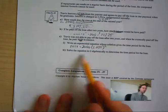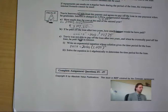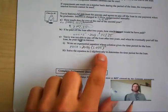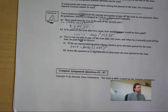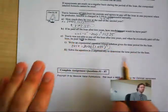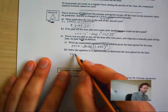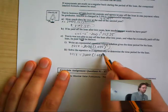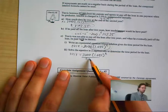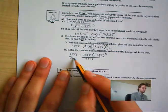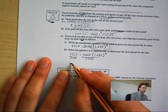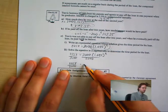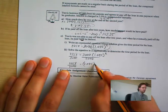Now solve this equation algebraically. First thing I want to do is isolate for my variable. So I have 2,458 is equal to 2,000 times 1.035 to the N. I divide both sides by 2,000 to isolate, which gives me 2,458 over 2,000 is equal to 1.035 to the power of N.